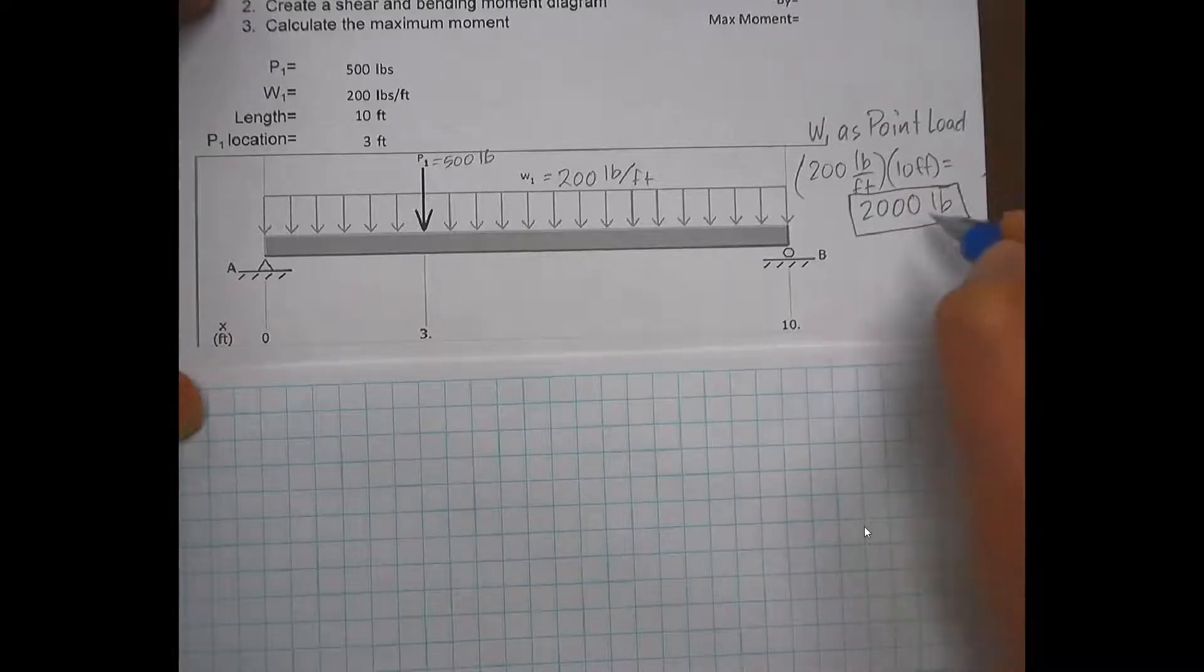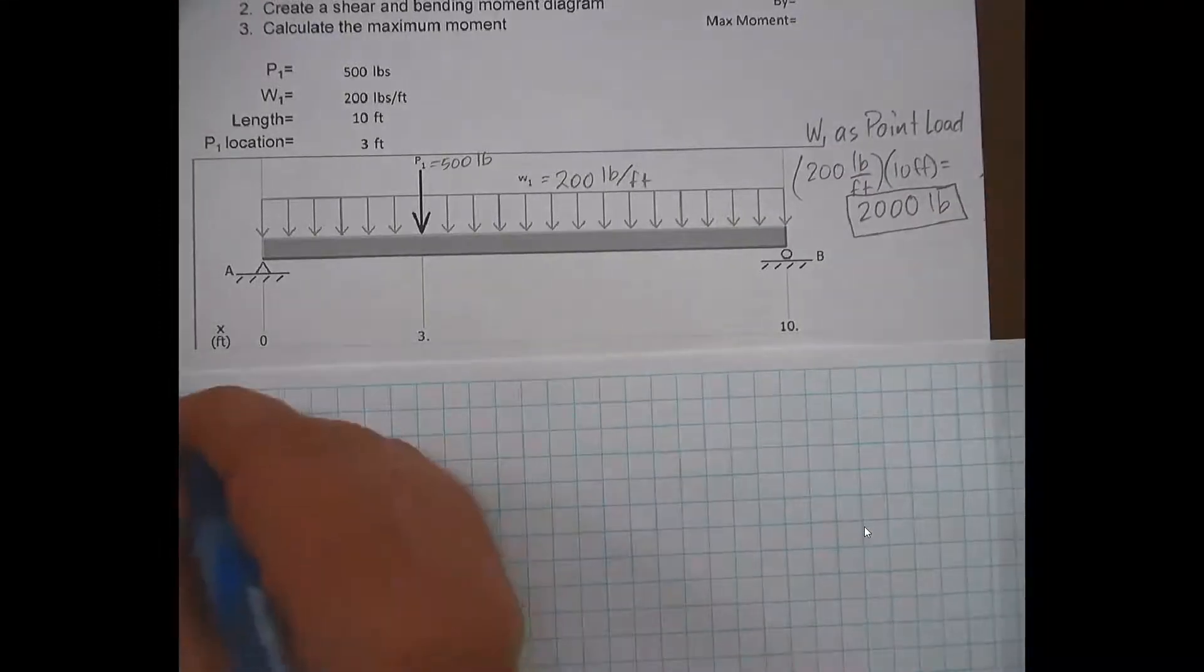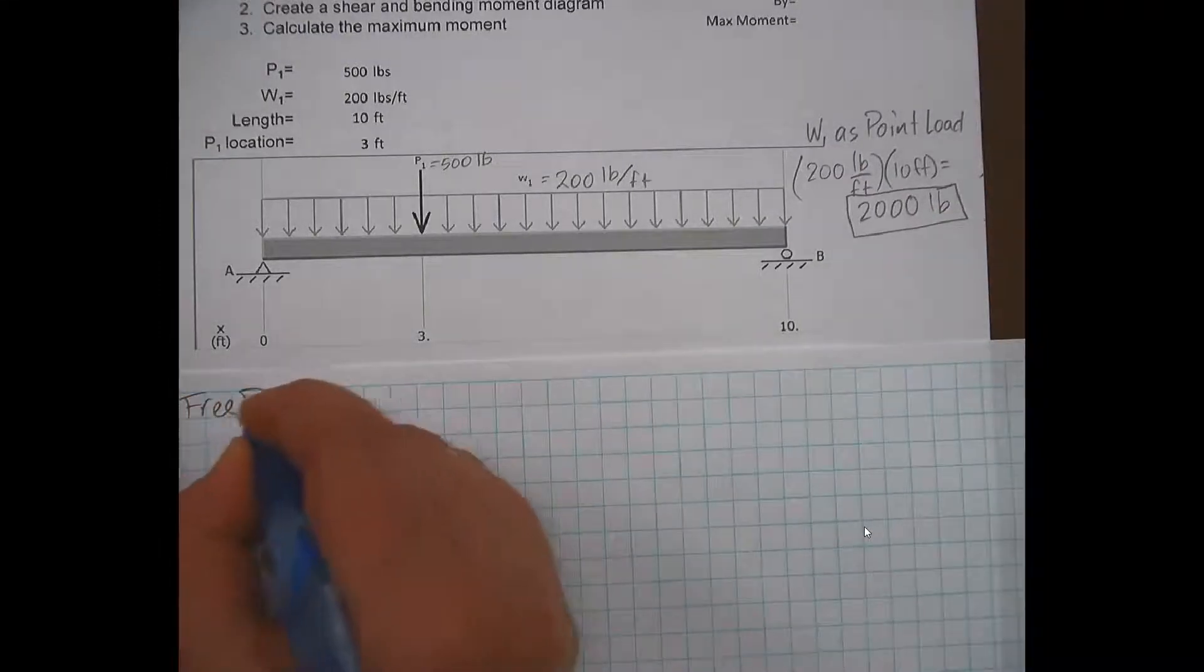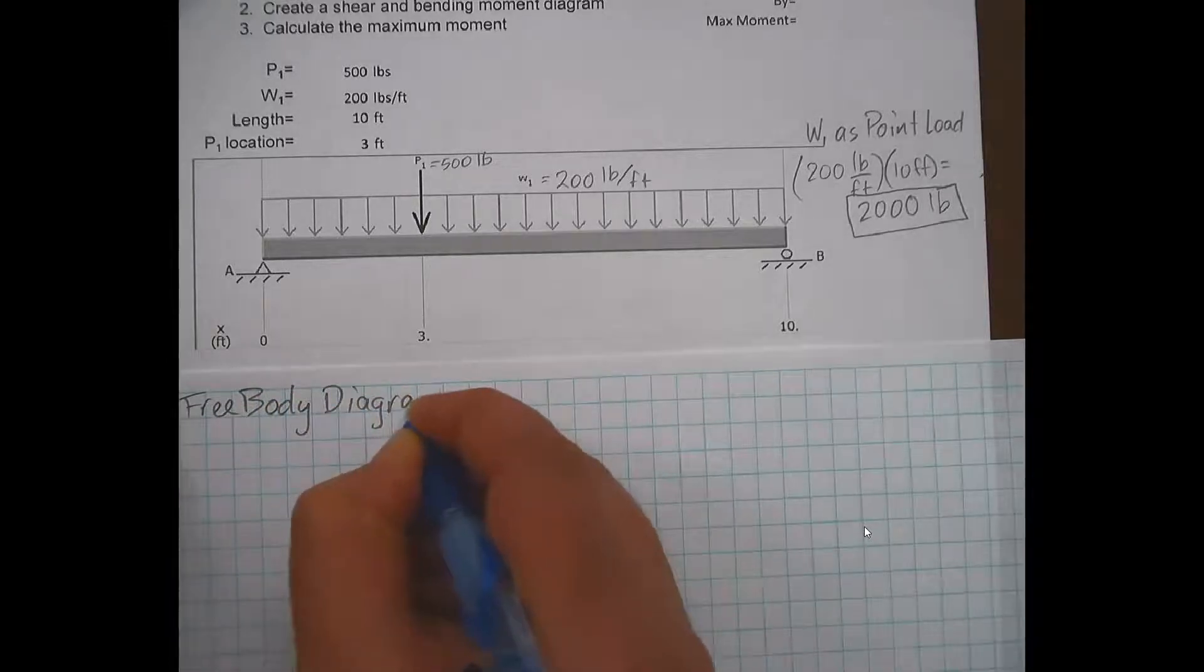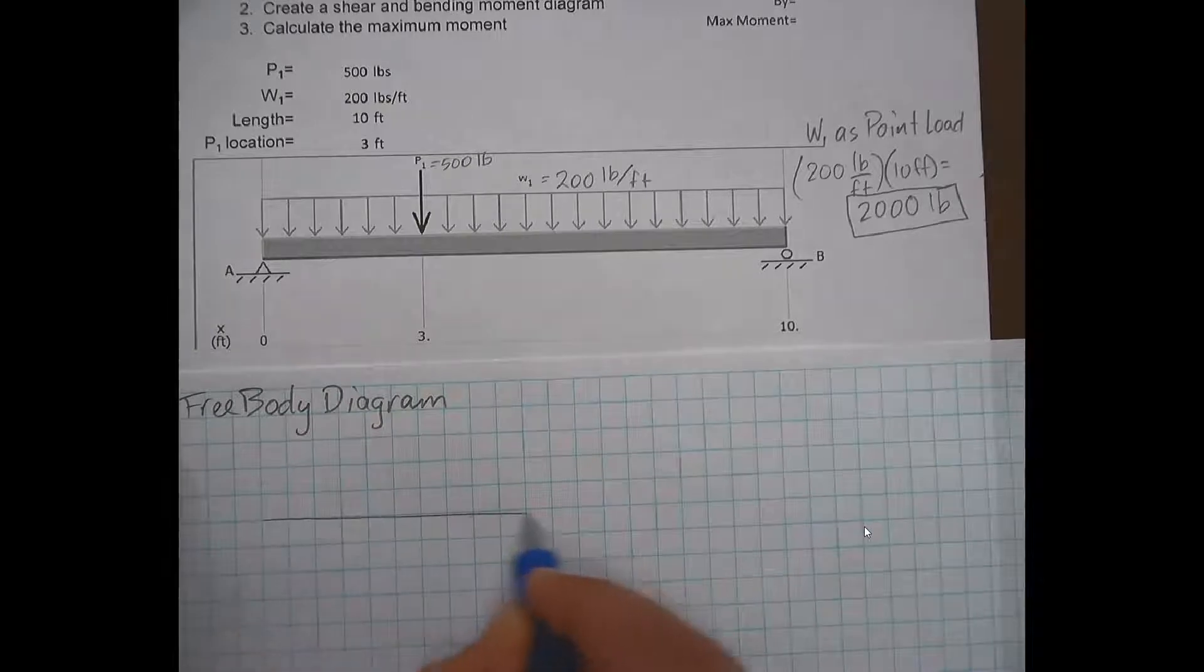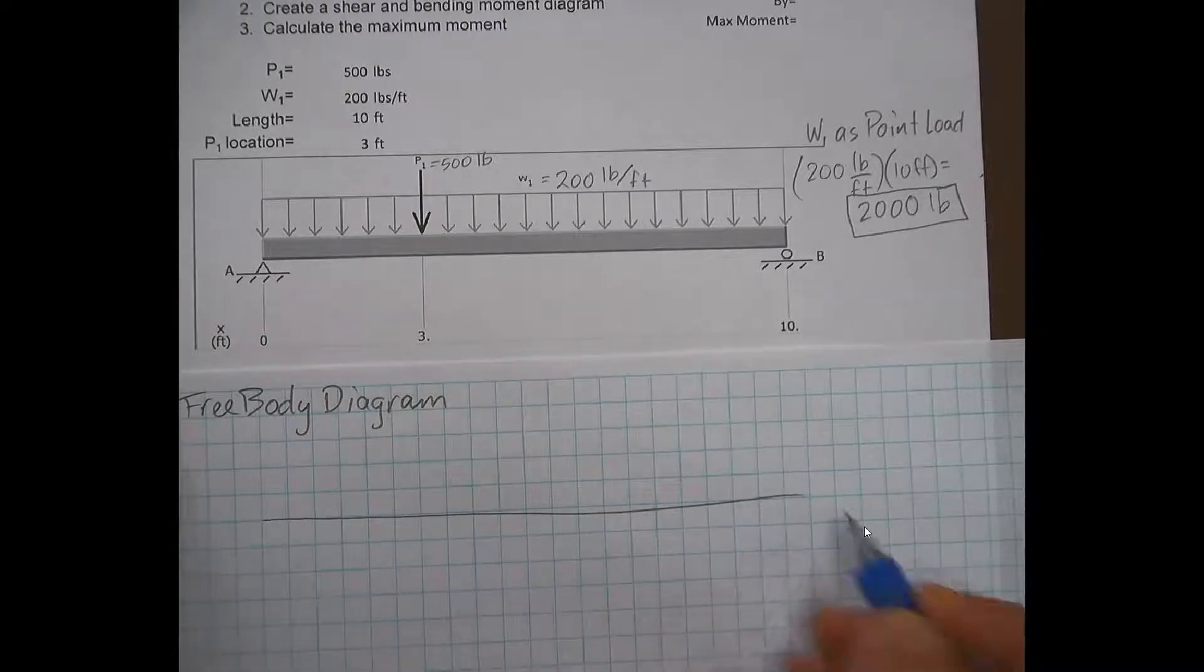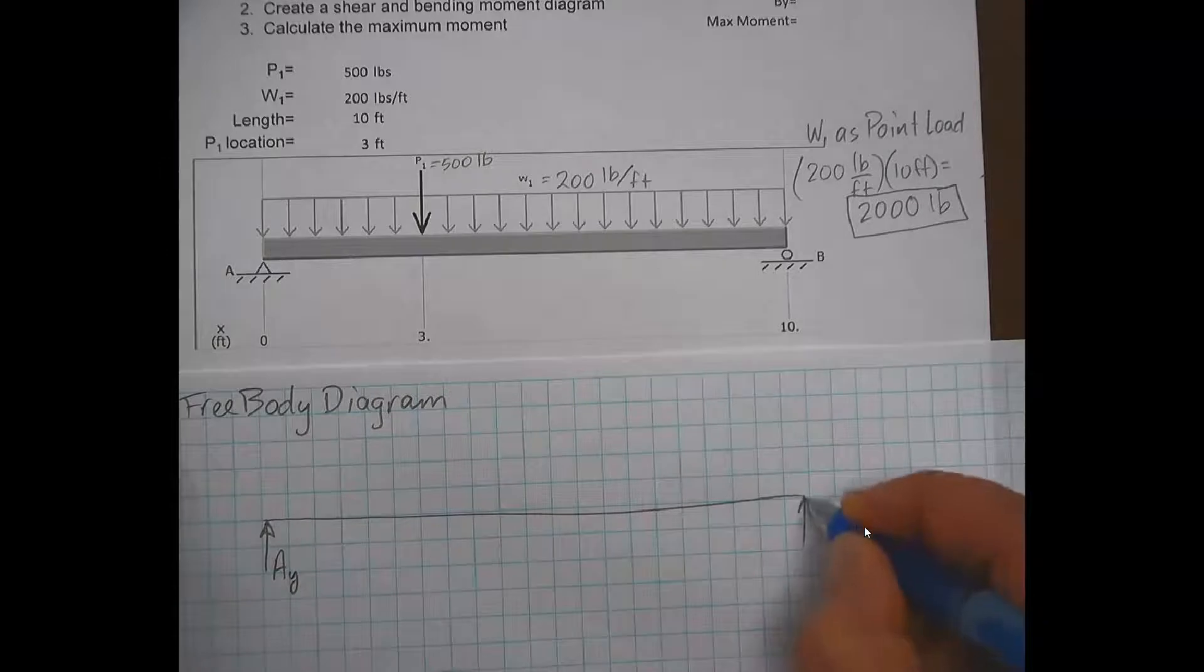That will be applied at the center. So let's put that into a free body diagram. We have this beam here, 10 feet long. And at the ends we're going to call this reaction force AY and this one here we're going to call BY.